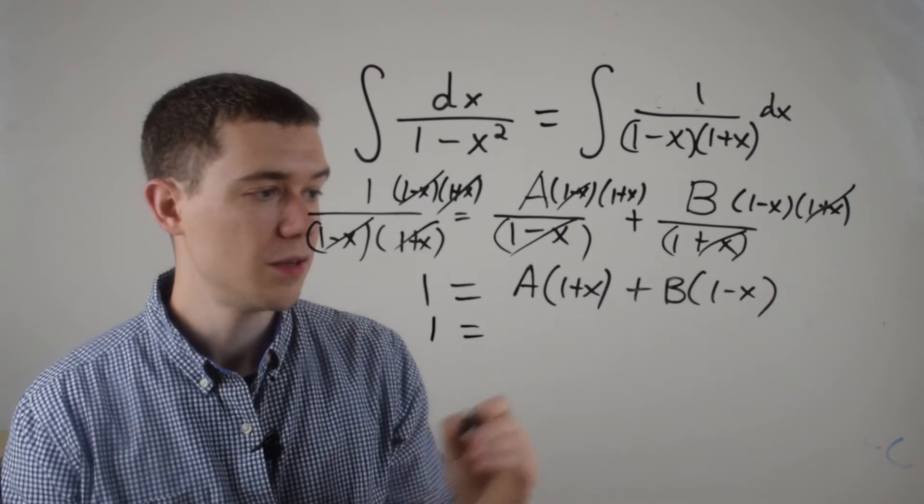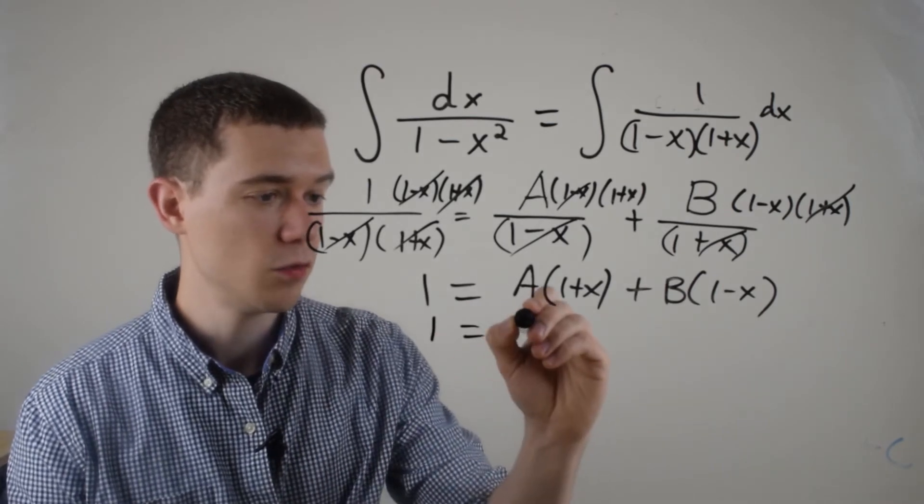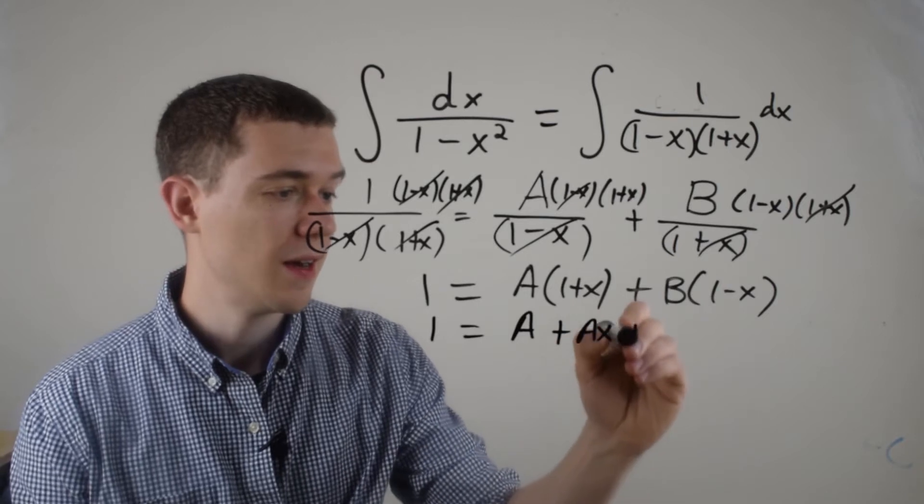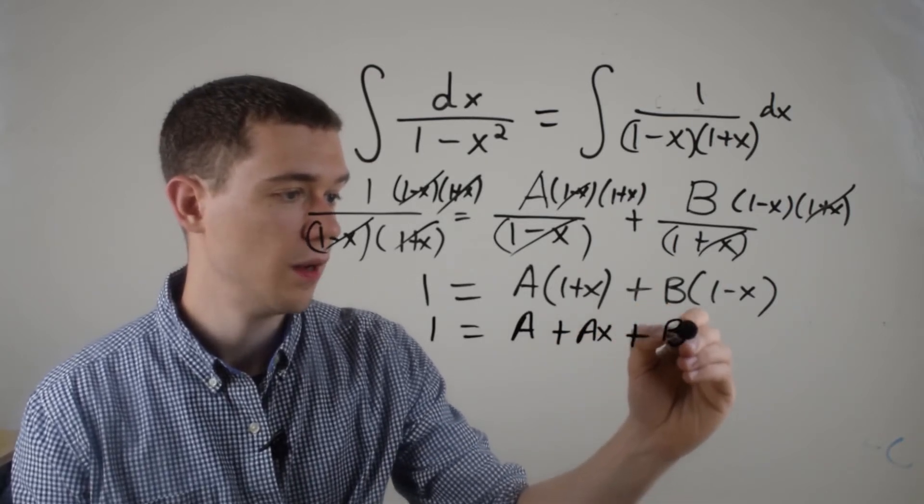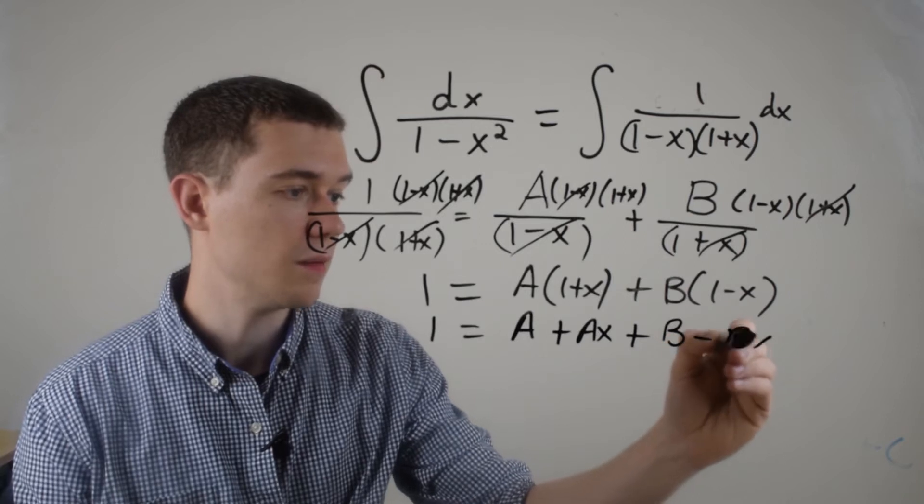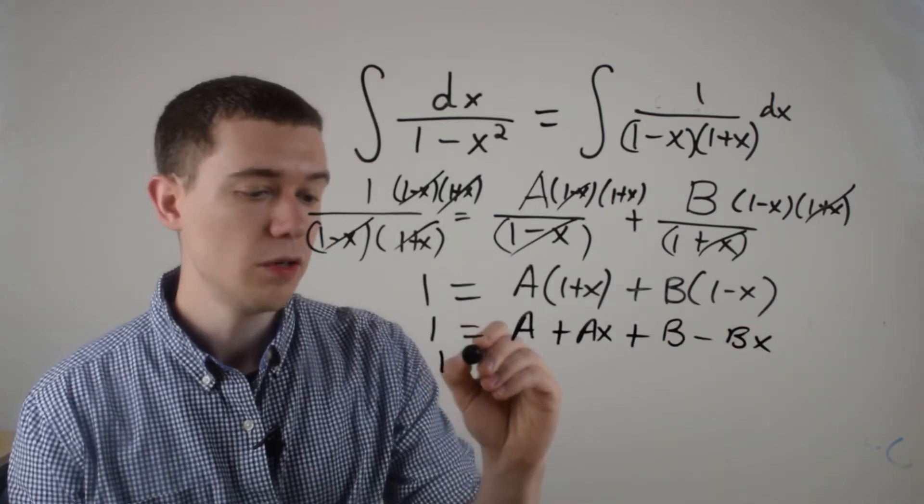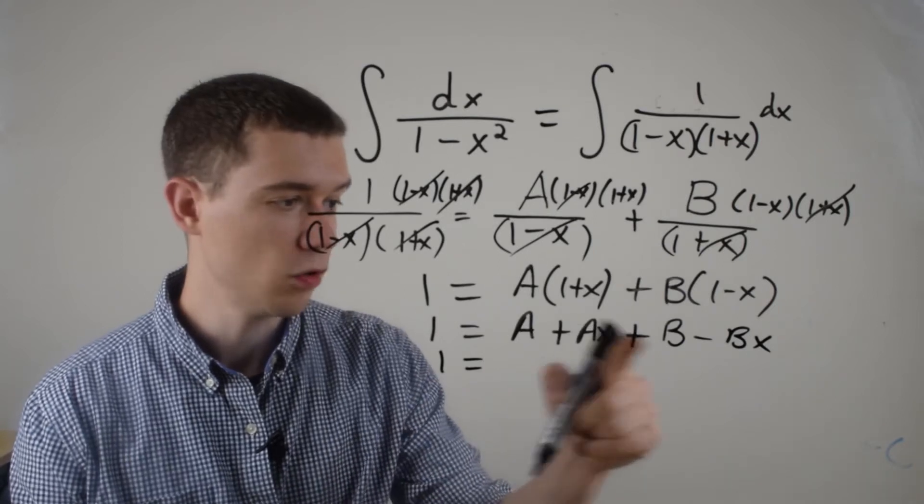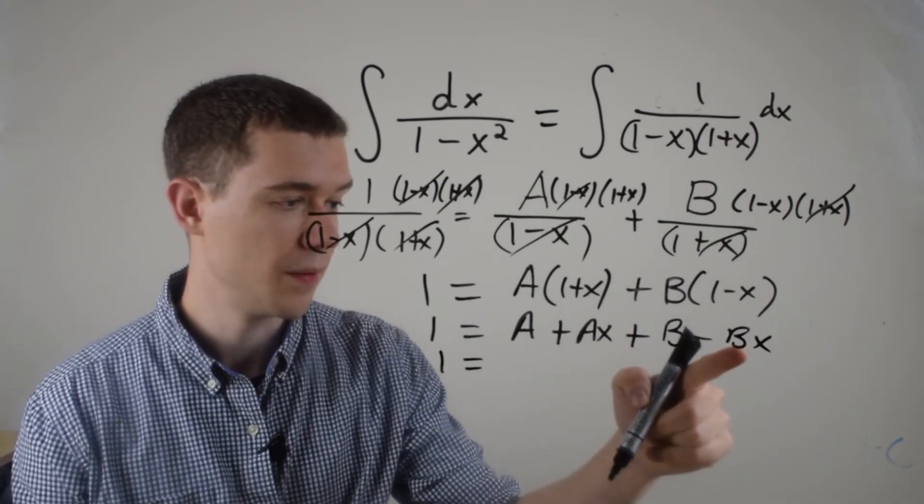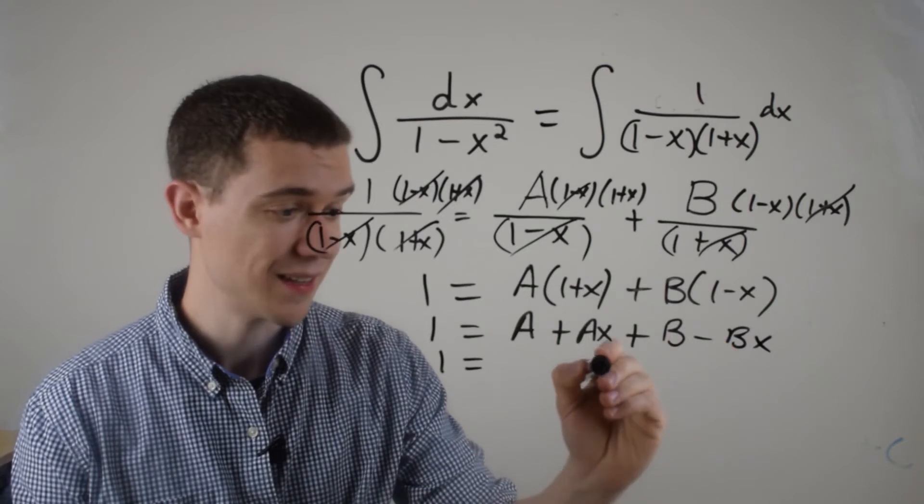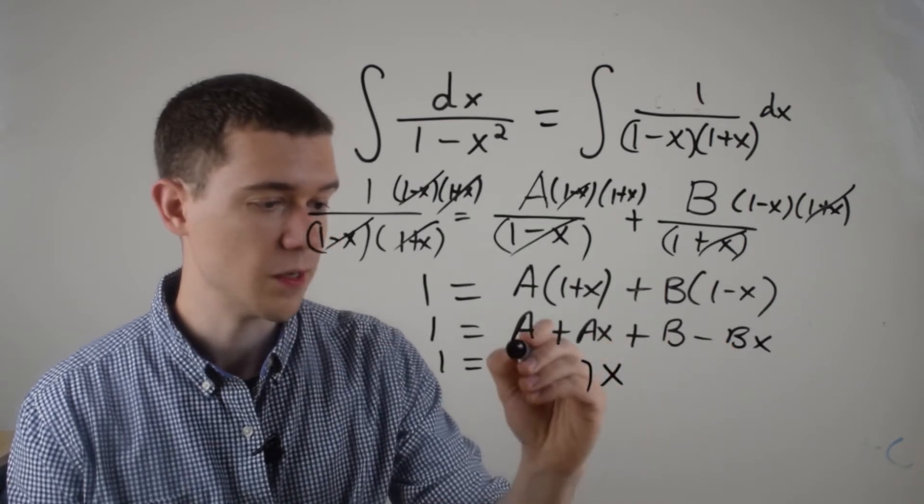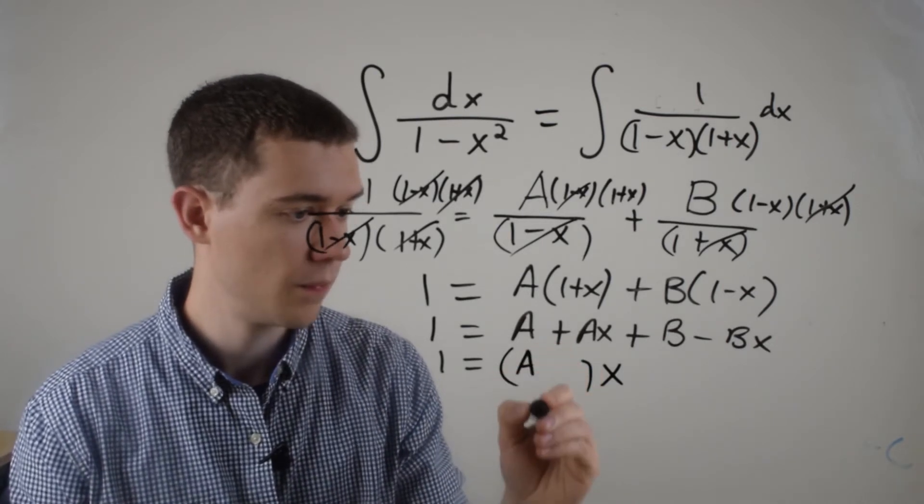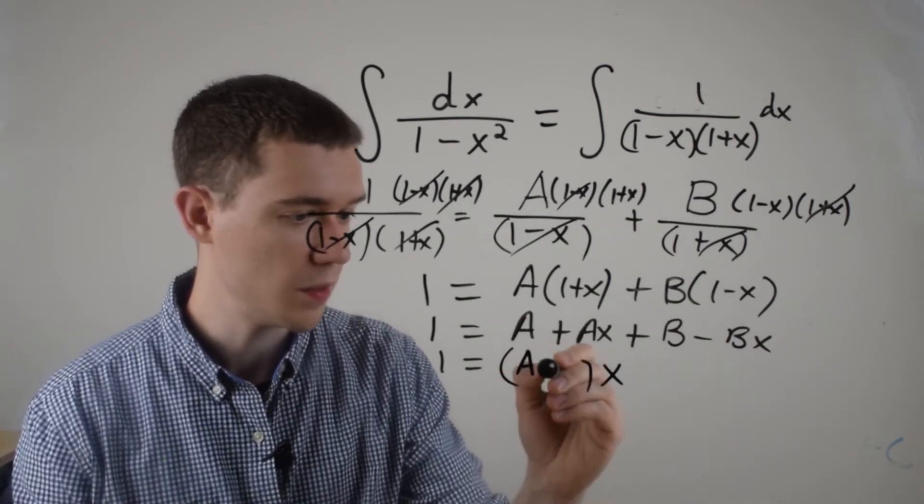If I distribute everything here, this would be A times 1 plus A times x. And then I'd also have B times 1 minus B times x. And I'm going to group by powers of x's. So if I group the x's together, and then factor out an x, or the way I tell my students is how many x's do I have? Well, it looks like I've got A of them, and I've also got minus B of them.